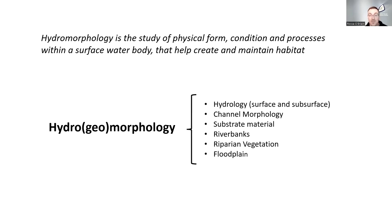In terms of hydromorphology assessments, what we look at is hydrology, surface and soil surface, channel morphology, substrate material, riverbanks, riparian vegetation, and floodplain. Riparian vegetation is also a biological element, but it has a strong influence on sediment and erosion processes and bank stability, which is why it's included.